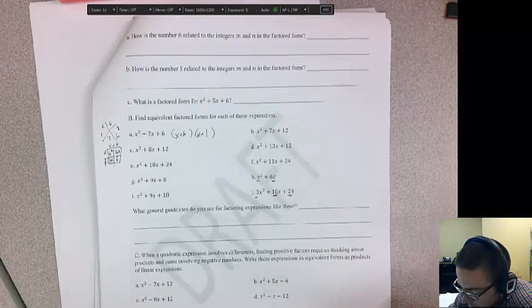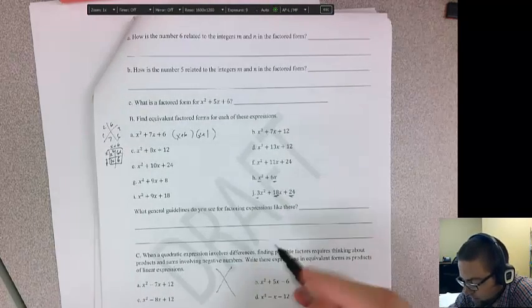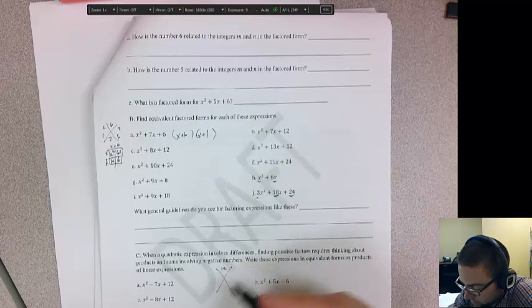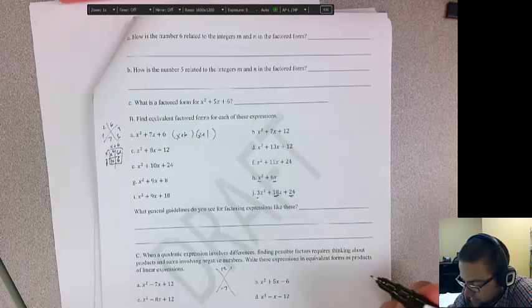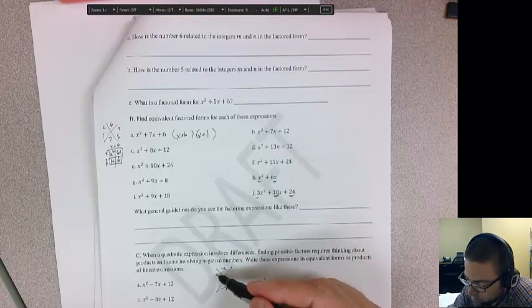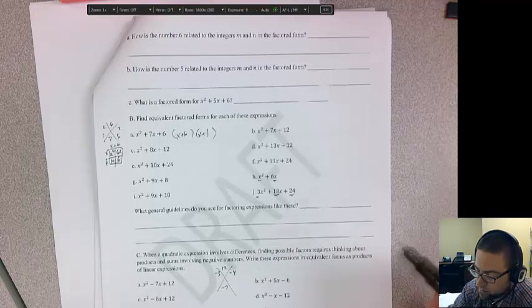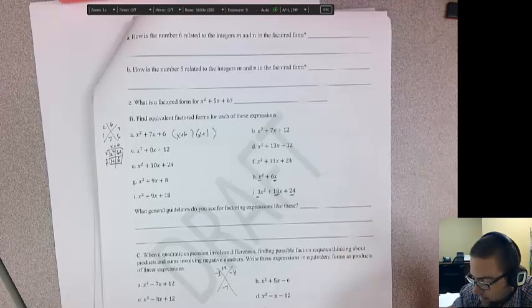So this one you have negative numbers, but it's the same deal. So I say, what do I multiply to get 12, but when I add it's negative 7? Well, they're going to both have to be negative. So let's try negative 3, negative 4. And that multiplies to positive 12, but when I add them it's negative 7.